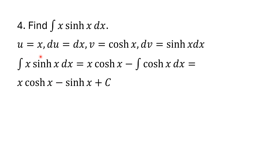So I'm going to let u = x and dv = sinh(x) dx. So v is the hyperbolic cosine of x. The integral of x·sinh(x) dx equals u·v = x·cosh(x), minus the integral of v·du, which is the integral of cosh(x) dx. The integral of hyperbolic cosine is hyperbolic sine, so the answer is x·cosh(x) minus sinh(x) plus C.